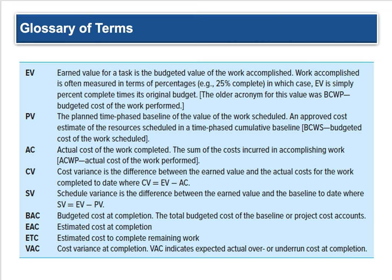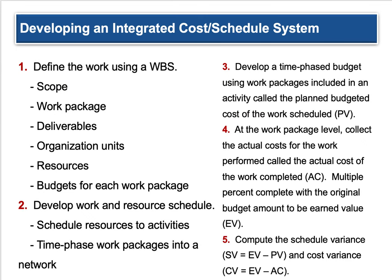With all this in mind, we can develop an integrated cost and schedule system. It goes back to defining the work in the Work Breakdown Structure — the scope of your project, work packages, deliverables, organizational units, resources, and budgets for each work package. We develop a work and resource schedule: the WBS leads into the schedule, scheduling activities and resources, then time-phasing work into the network gives you a Gantt chart. Develop a time-phased budget and you get a cash flow. Remember the WBS had lag time built in, with costs broken down by individual units, then added up into a budget.